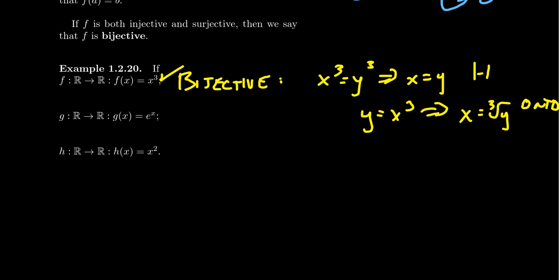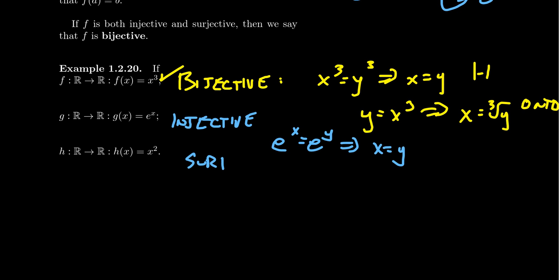Take the function g from the reals to the reals, g(x) = eˣ. In this situation, we do get that the function is injective because if eˣ = eʸ, taking the natural log of both sides gives x = y — the outputs agree only if the inputs agree. But on the other hand, it's not surjective. The reason is that negative one never equals eˣ for any value of x — you can never get a negative output from the exponential, at least in the realm of real numbers. So this function is injective but not surjective because it doesn't hit everything in the codomain.